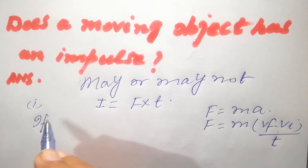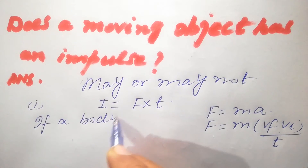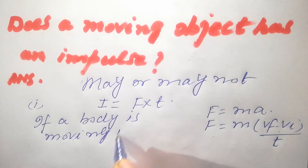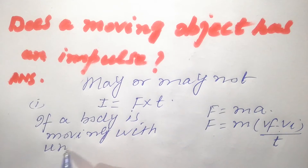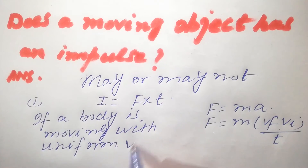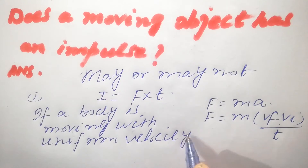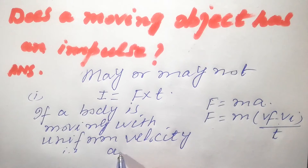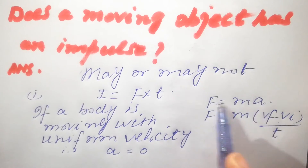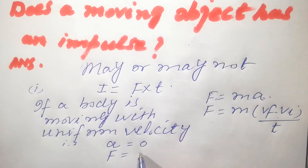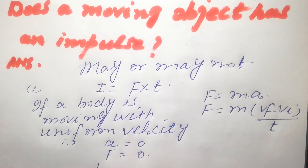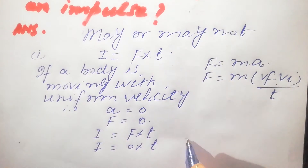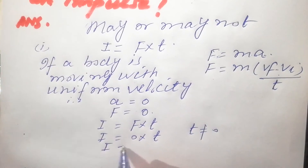If a body is moving with uniform velocity, it means acceleration is 0. And if the acceleration is 0, according to this equation, F is equal to 0. And if F is equal to 0, then impulse is equal to 0, because time is not equal to 0. So that is why impulse is equal to 0.